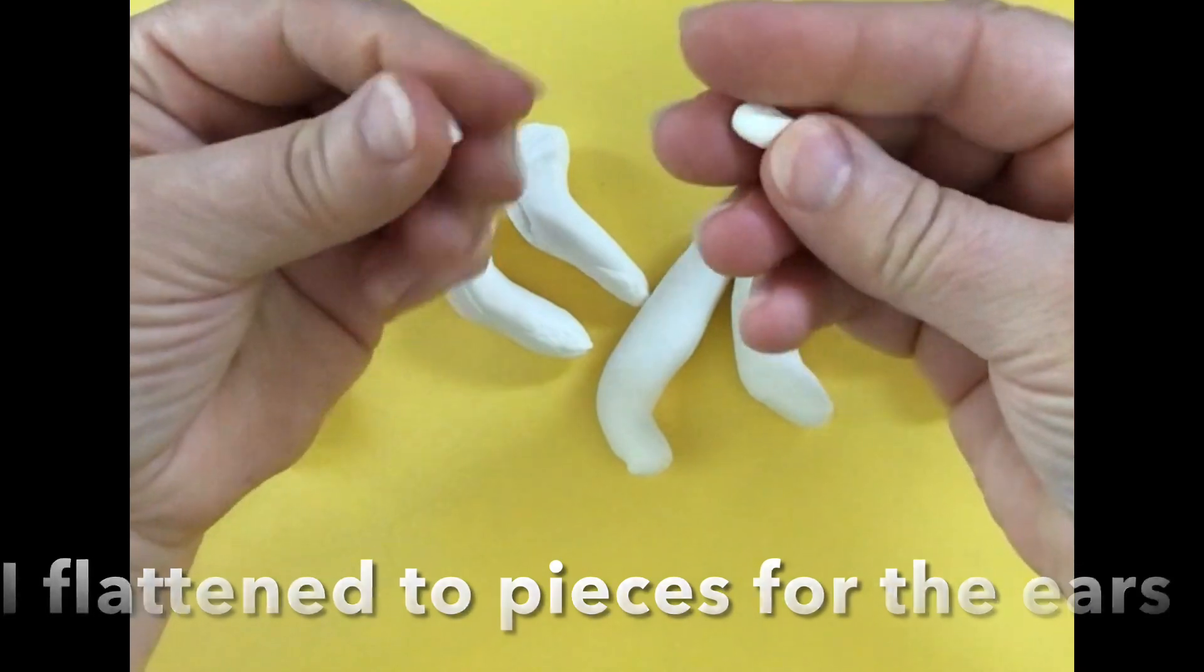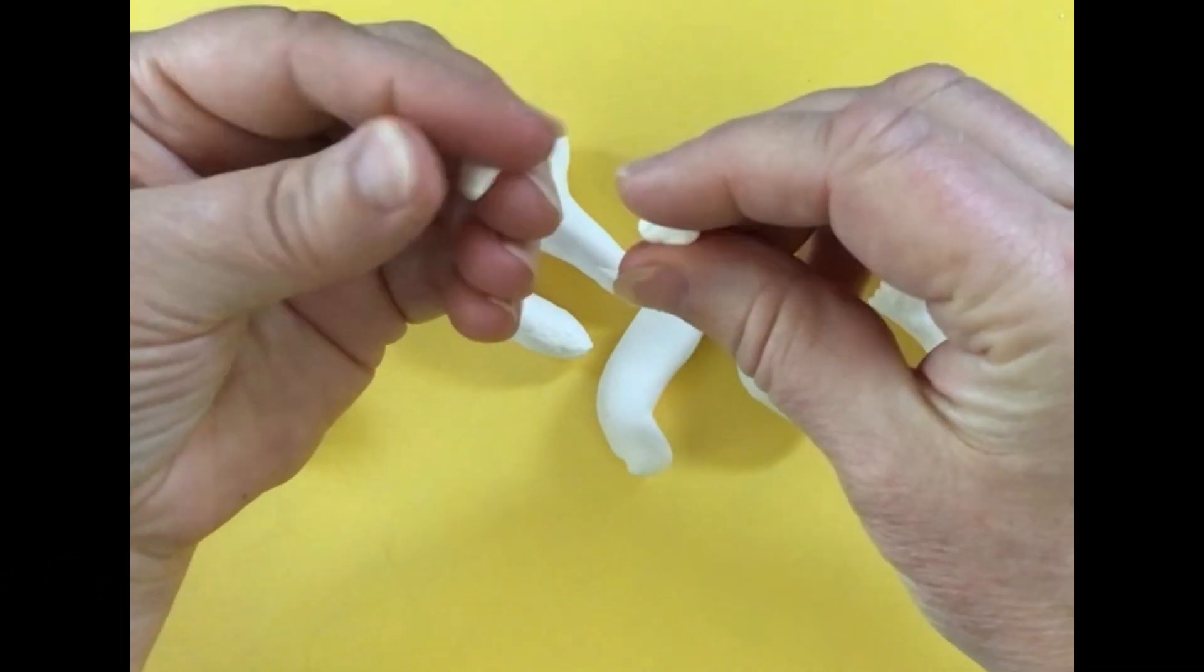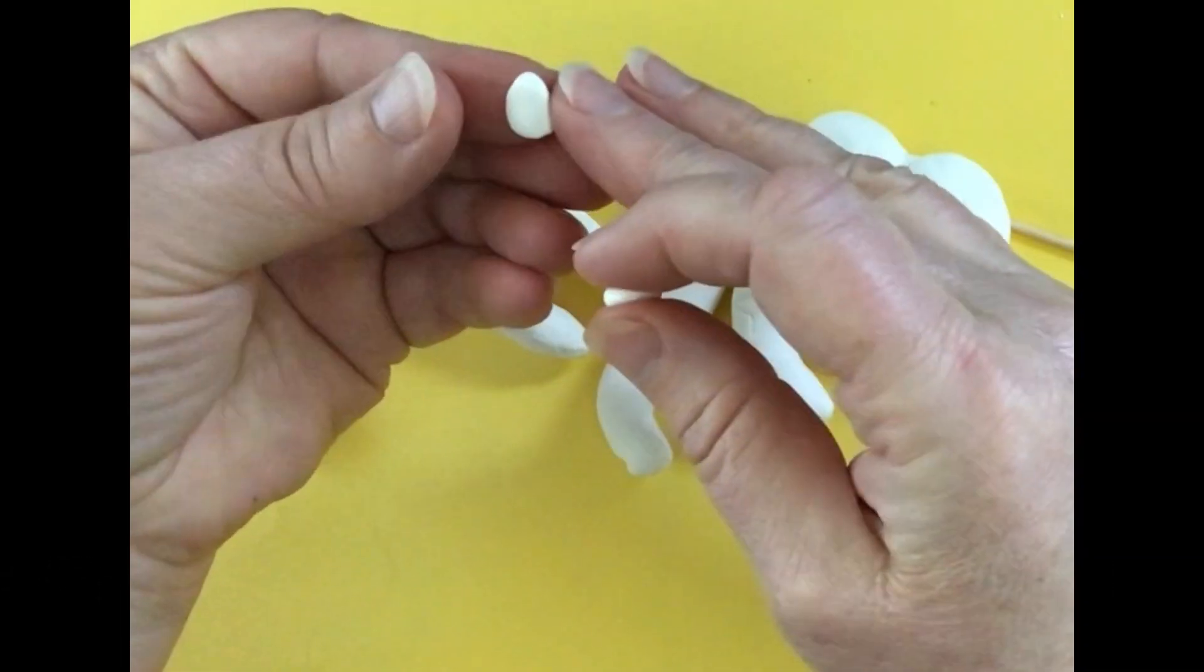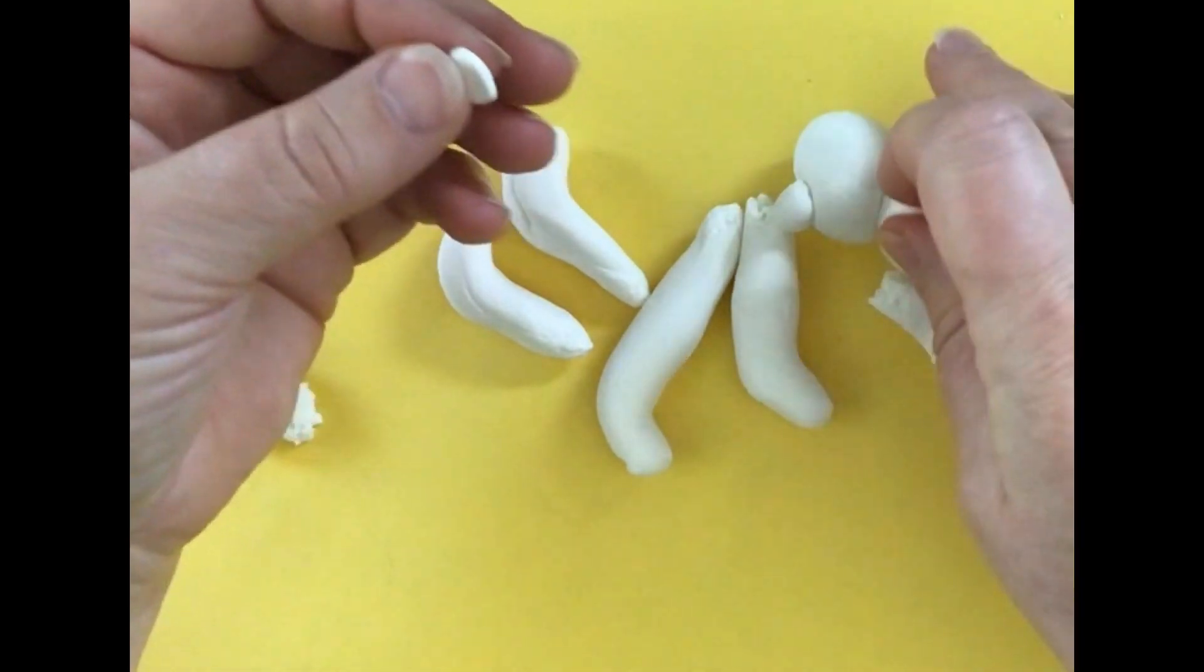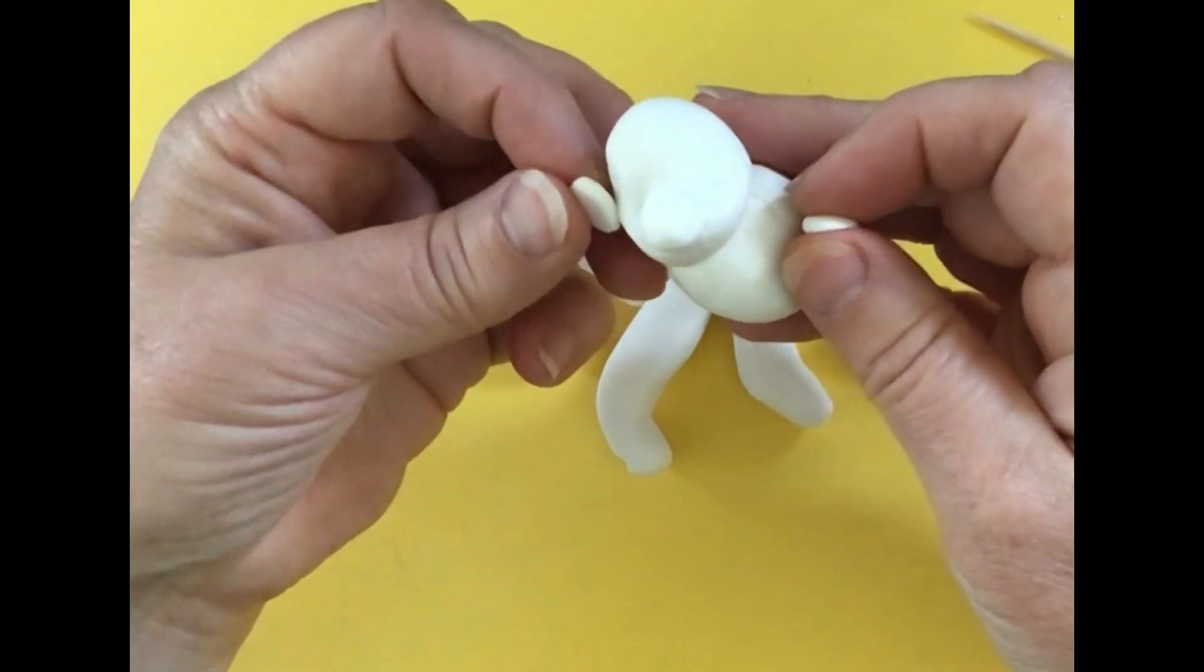I make two little pancakes, roll them out with my fingers, squish them down and then flatten it. And these are going to be the ears. I'm going to put them on both sides.